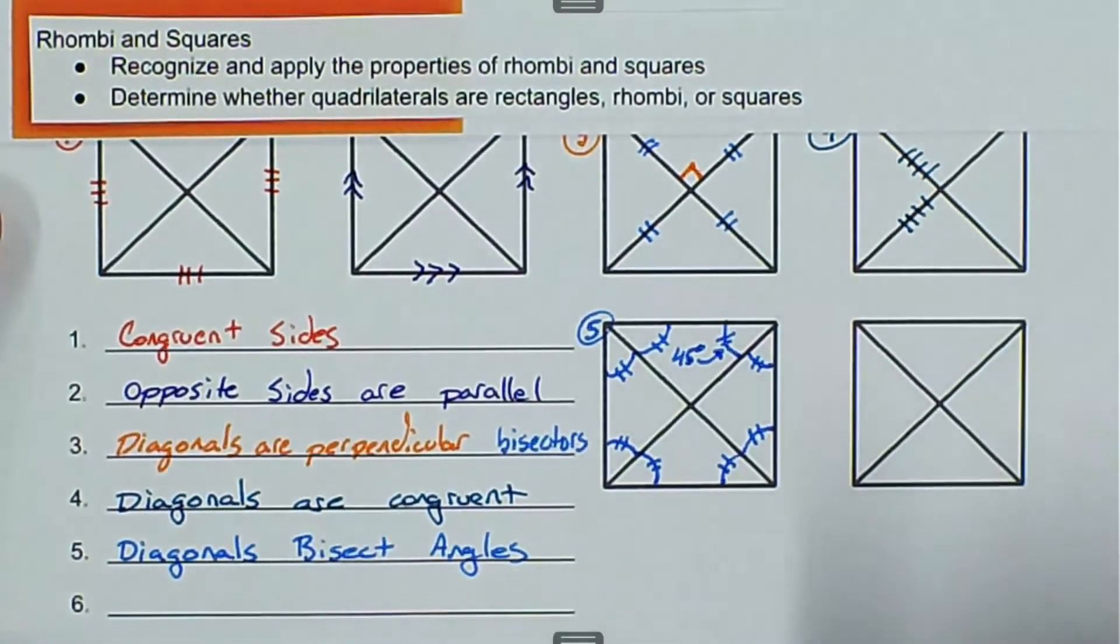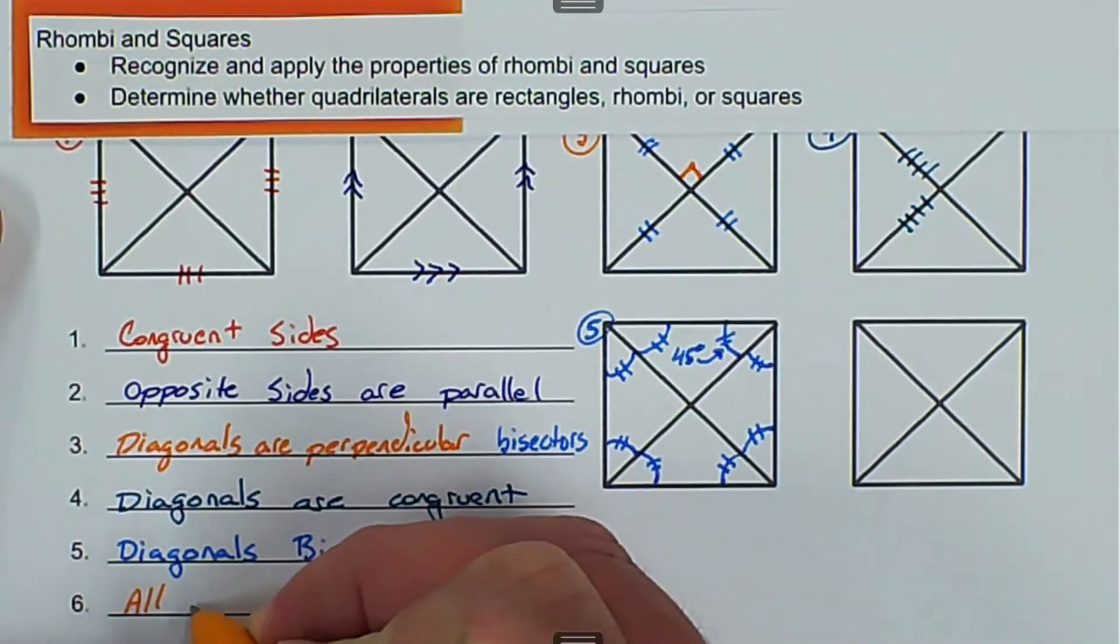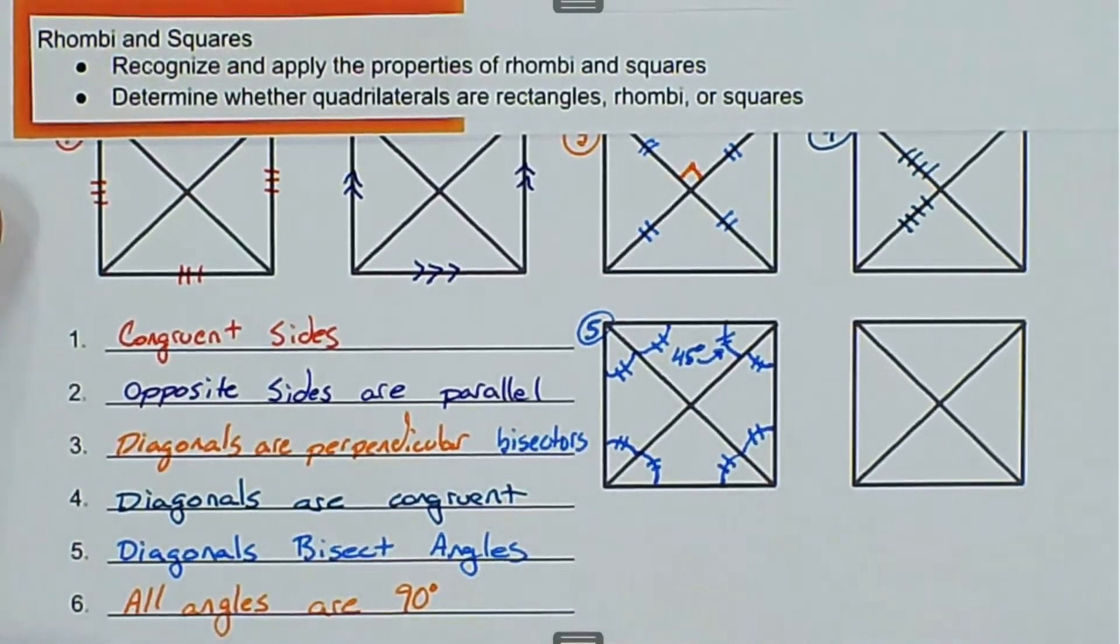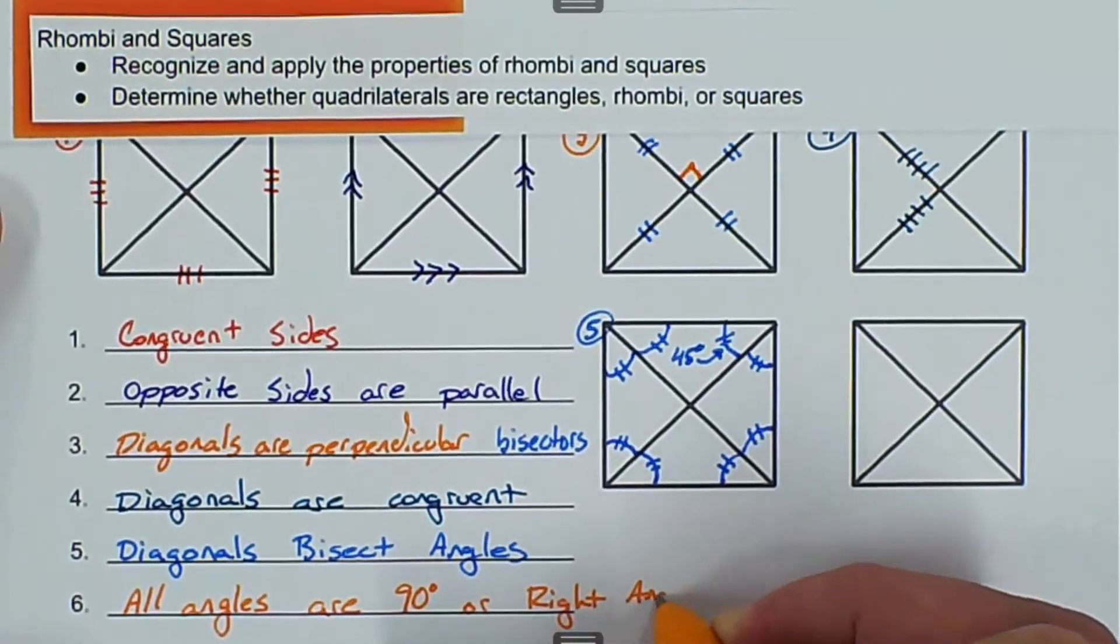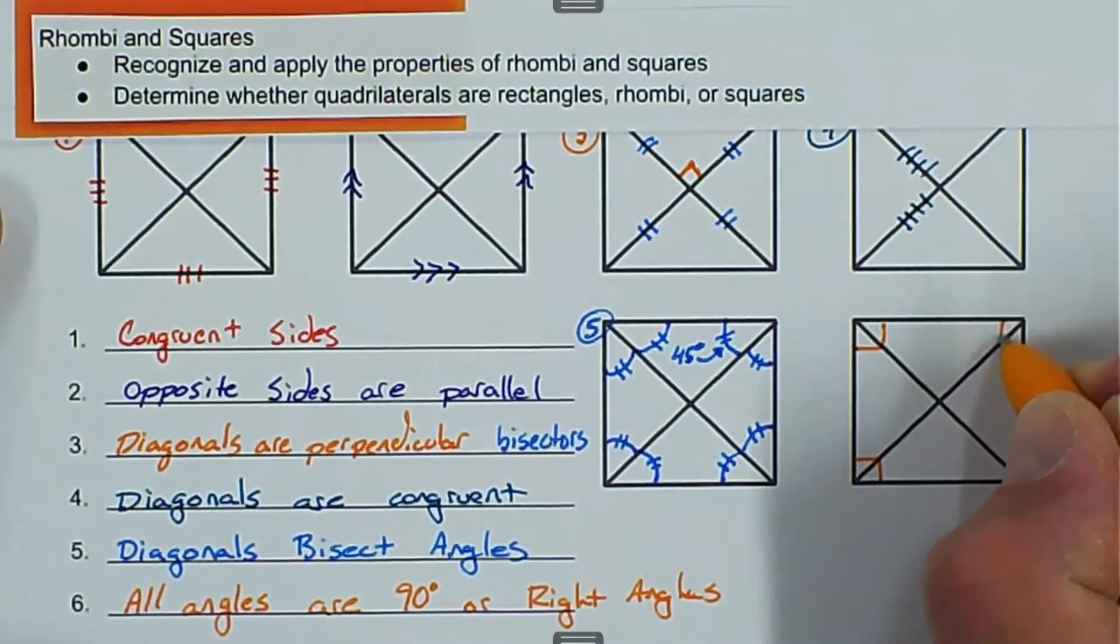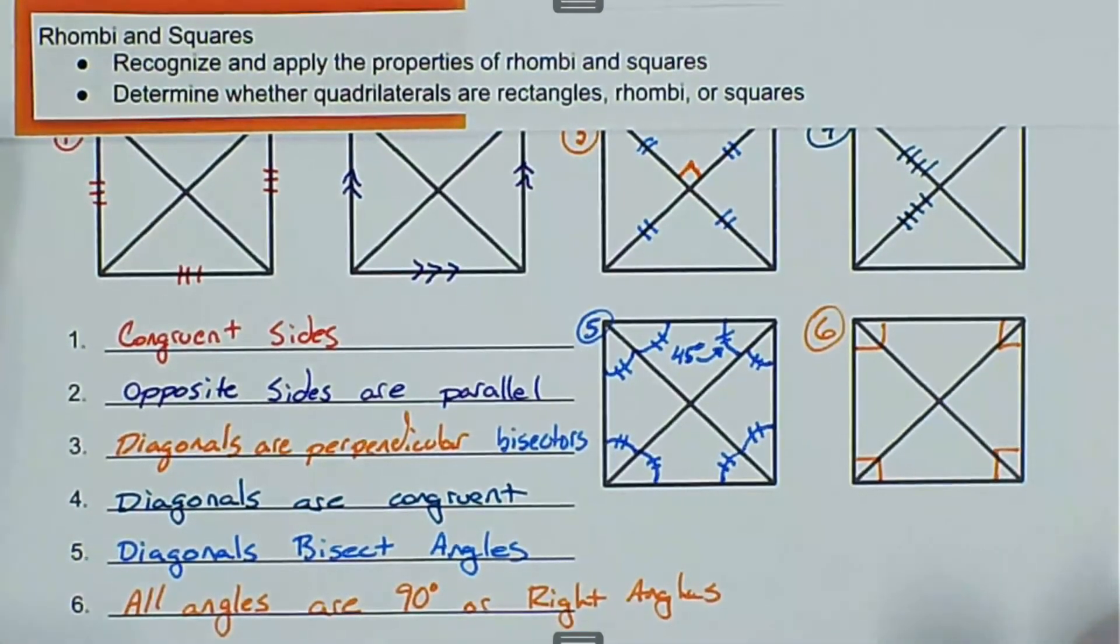Those are all 45-degree angles because all angles are 90 degrees, and that's the last one we're going to write down. All angles are 90 degrees or right angles. That's 90 degrees, that's 90 degrees, that's 90 degrees, and that's 90 degrees. That was the sixth one that we talked about. So these are the six properties that a square has.